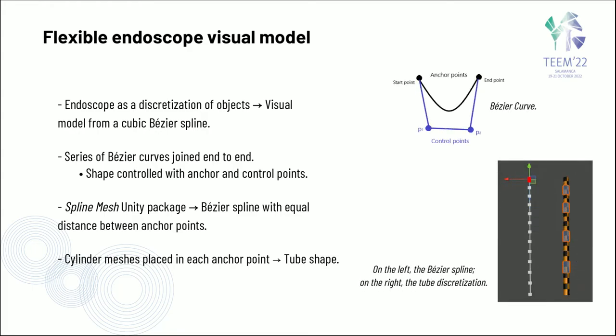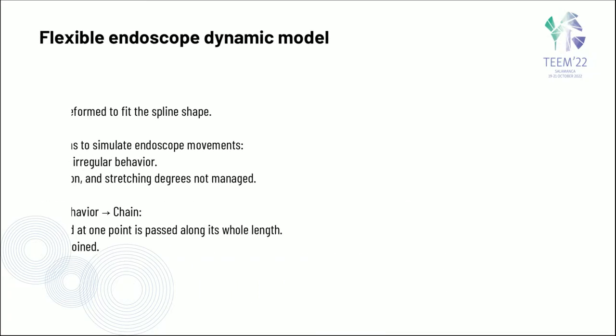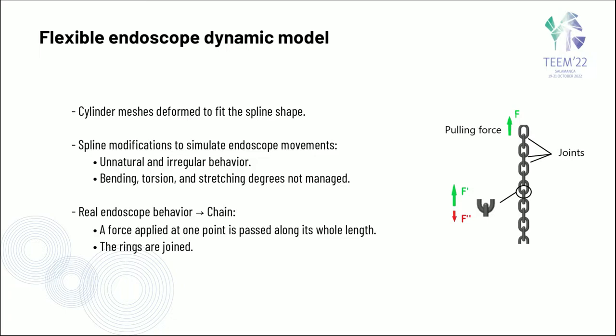Following the line of thought of using discretization for the rod, we created the visual model of the endoscope using a Bezier spline. As a series of Bezier curves joined end-to-end, a spline shape can be controlled by modifying the anchor and control points. With the Spline Mesh Unity package, a straight spline with equal distance between anchor points was defined, and cylinder meshes were placed at each anchor point to obtain the desired tubular shape. The thin intermeshes deform to fit the spline shape thanks to the built-in deformation system of the Unity package. This feature was tested as a source for the endoscope dynamics but was discarded due to unnatural movements and lack of control over bending and torsion degrees of the model.